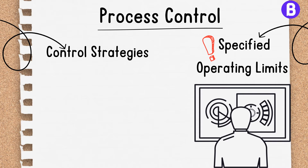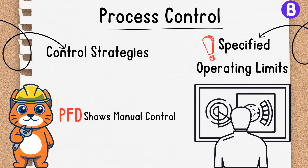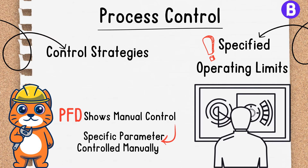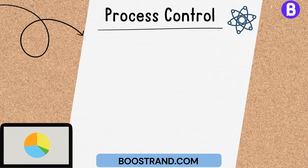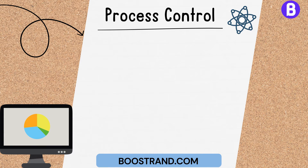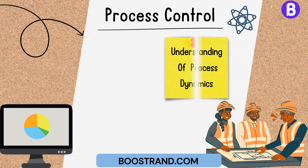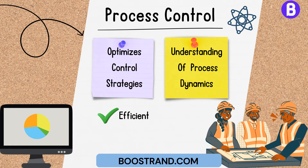In addition, a PFD also shows manual control. If there is a specific parameter that is controlled manually by the operator, the PFD shall show the manual valve and the instrument from where the operator shall see the reading. Reflecting the control schemes on a PFD gives engineers and operators a holistic understanding of the process dynamics and optimizes control strategies for efficient and safe operation.